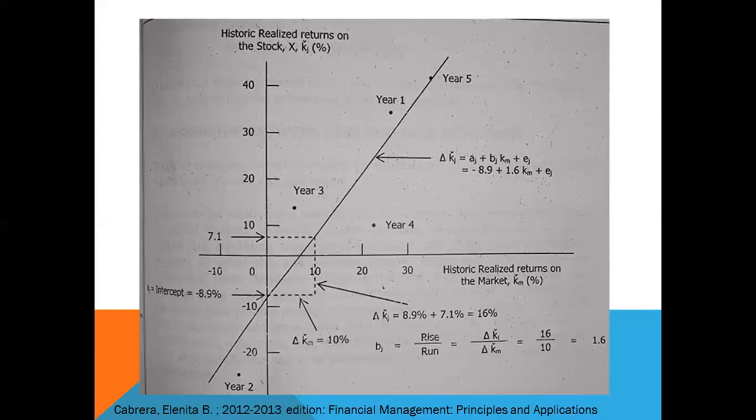Note though that the higher the correlation coefficient, the closer the points lie to the regression line and the smaller the errors. In actual practice, monthly rather than annual returns are generally used for k sub j and k sub m.